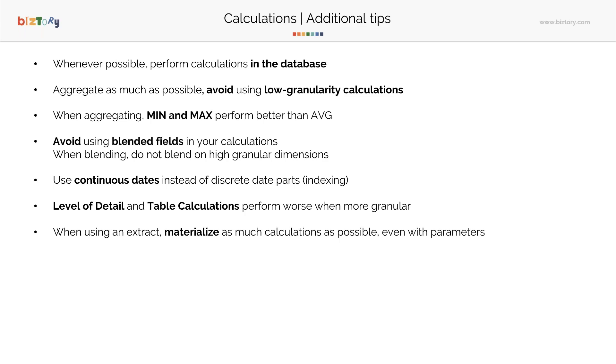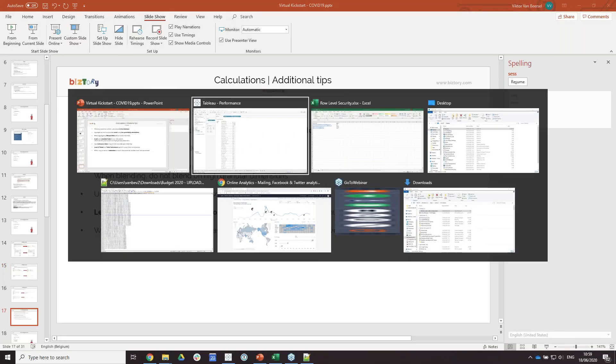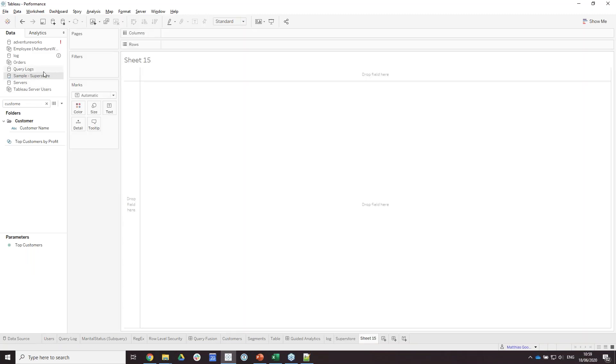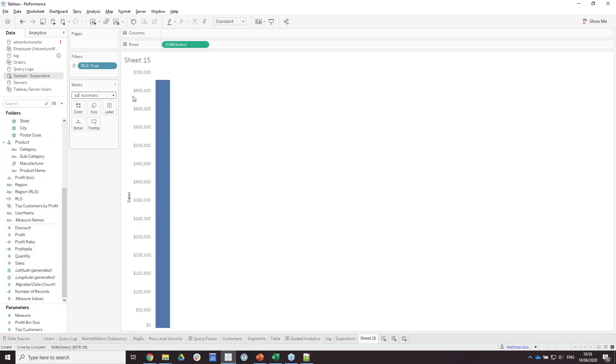And then blending. Before I go into the blended fields, I'm not sure if everyone is familiar with blending in this call, so I'm just going to show that shortly. Let's say we have a data source which shows the sales and the profit from a superstore, and we have another table which shows the orders.